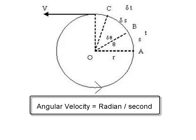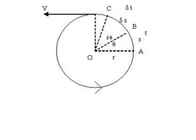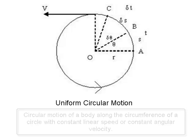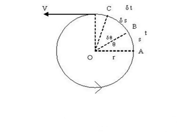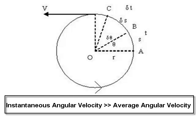The unit of angular velocity is radian per second. When the angular velocity is not changing, or when the magnitude of linear velocity V is not changing, then the body is said to be moving with uniform circular motion. Uniform circular motion is defined as motion of a body along the circumference of a circle with constant linear speed or constant angular velocity. In UCM, the instantaneous angular velocity is magnitude-wise the same as average angular velocity.